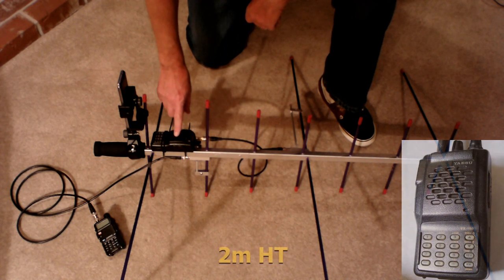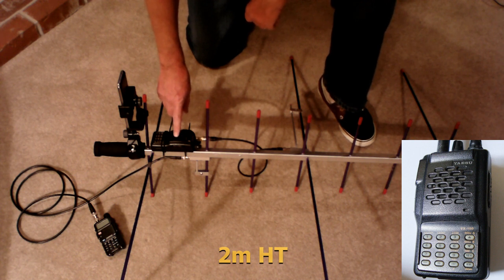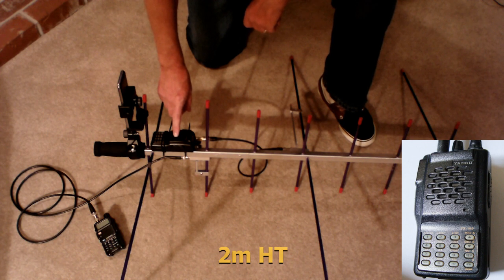Next, our receive radio is a Yaesu FT-150. This is a mono band 2 meter HT. I just happen to have it around the house, and it works great for receiving.